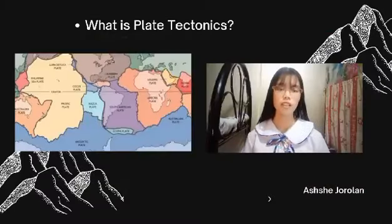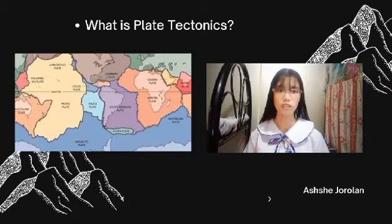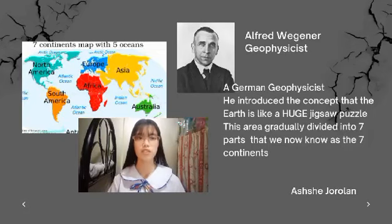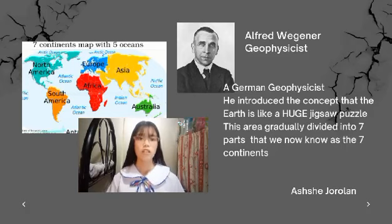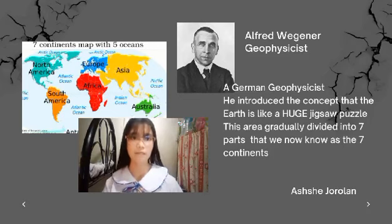Did you know that all seven continents were once joined like a jigsaw puzzle? A German geographer, Alfred Wegener, introduced the concept that the Earth is like a huge jigsaw puzzle. This area gradually divided into seven parts that we now know as the seven continents.